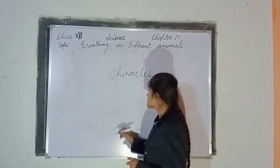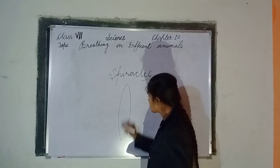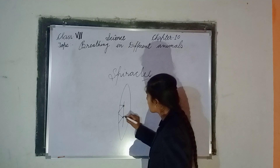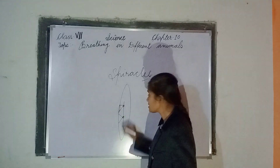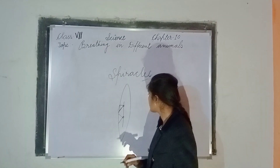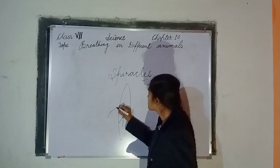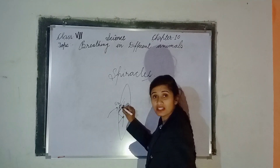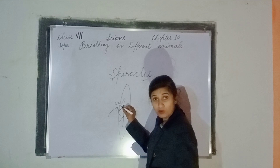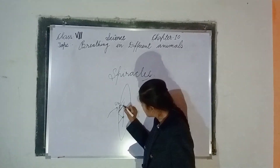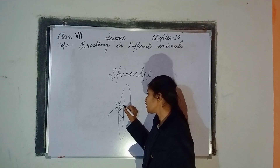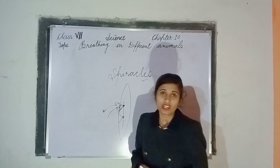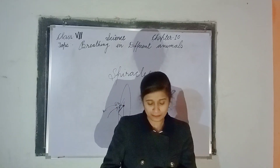This is how breathing works in insects. Oxygen enters through the spiracles, spreads out through the tracheal network, and is delivered to the cells of the body. In this way, oxygen is utilized by the cells, and carbon dioxide is released back out. This is how breathing is possible in insects through the tracheal system.